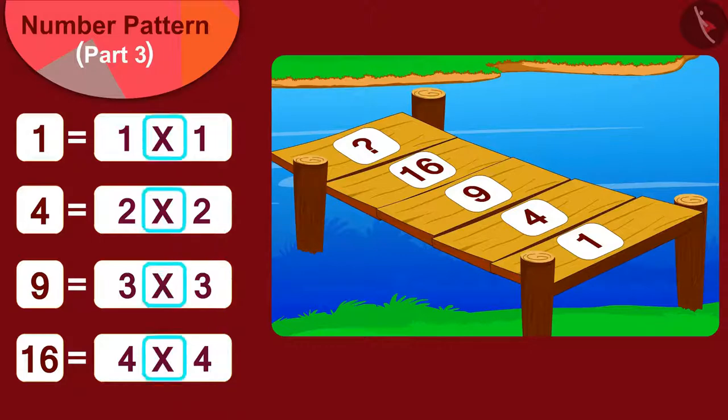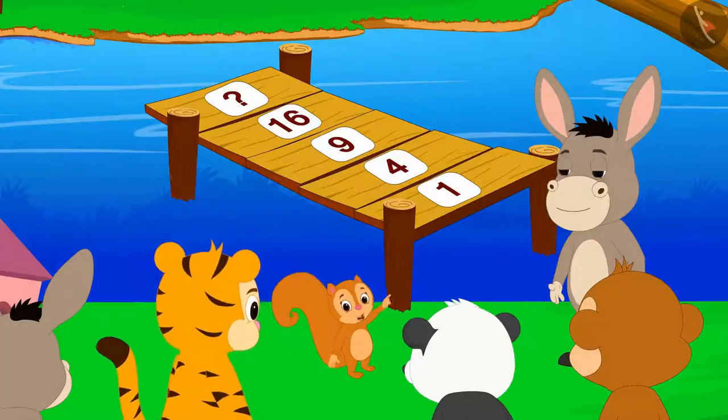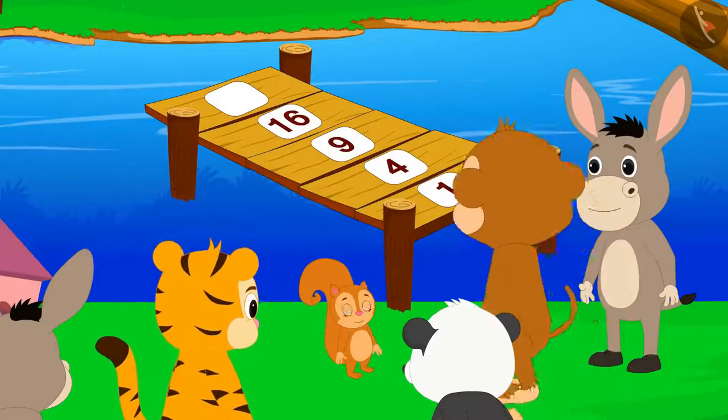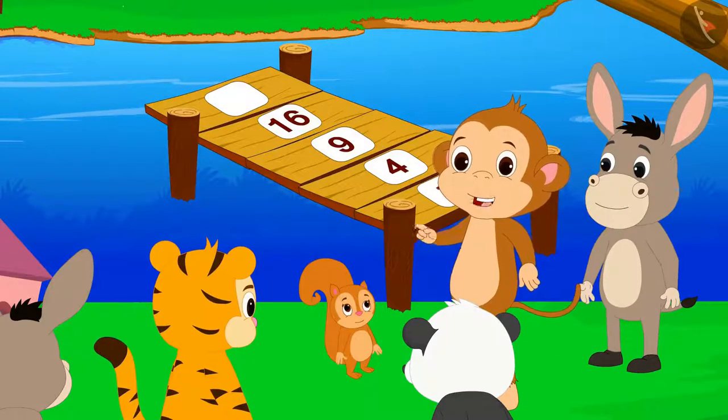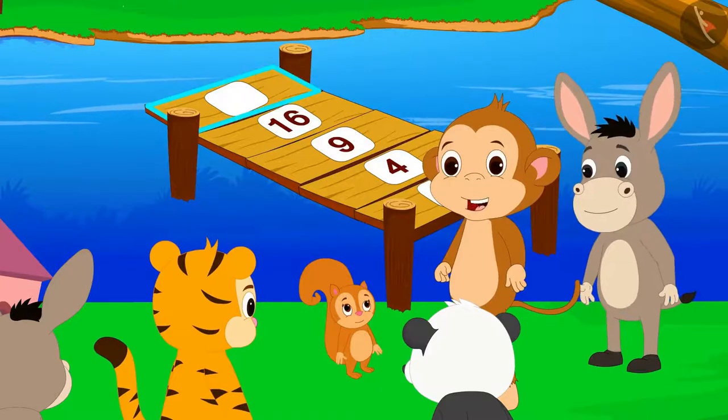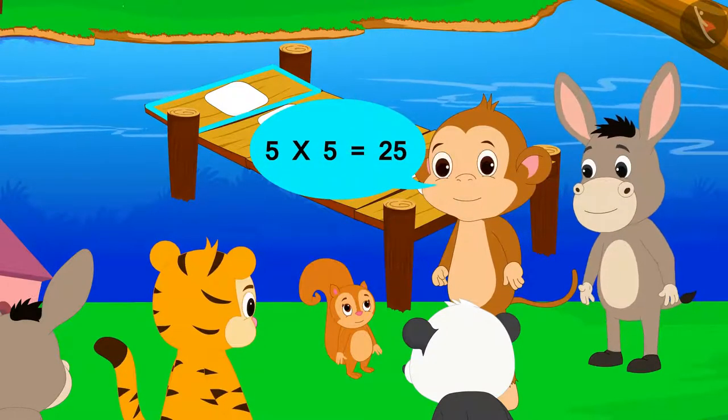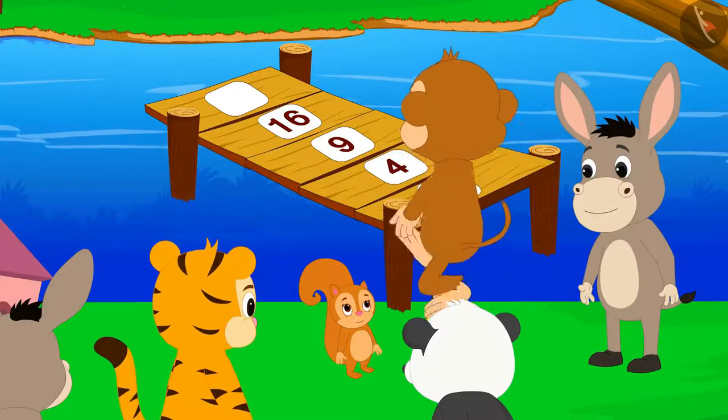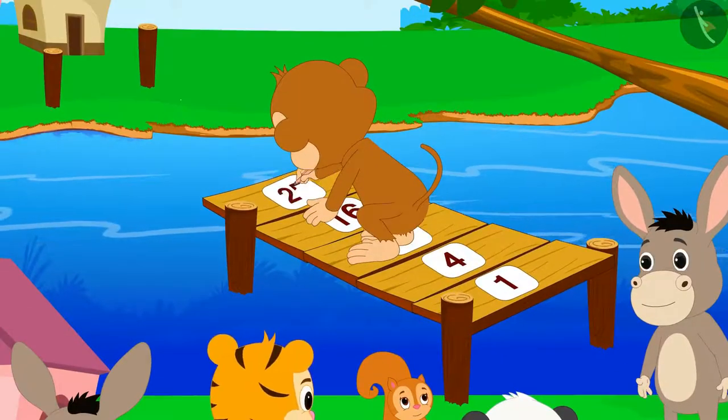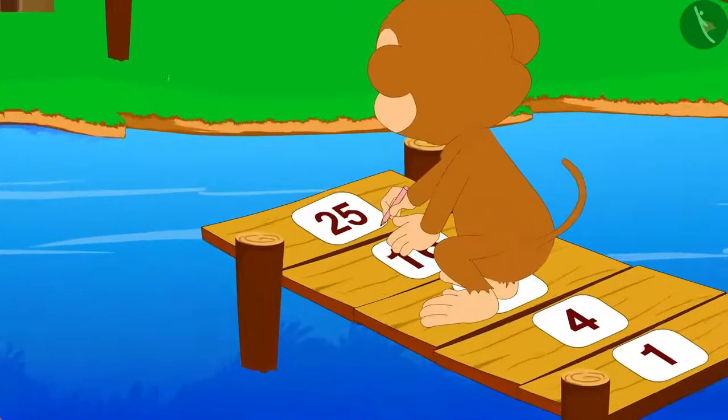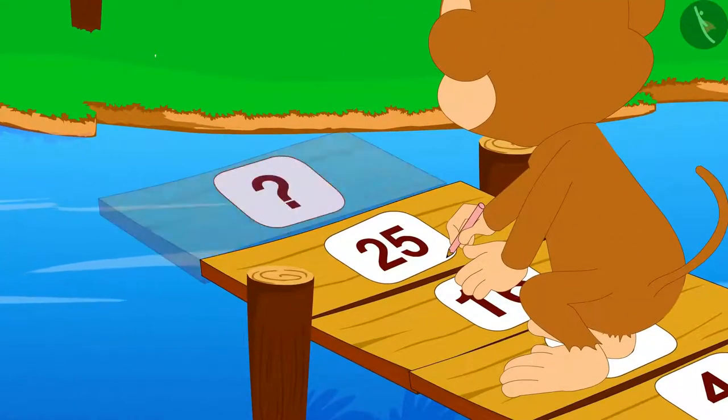"That would mean the number written on this fifth plank would be five times five: twenty-five." Saying this, Babban immediately wrote 25 on the fifth plank. As soon as Babban wrote the number, the next plank of the bridge got added to the bridge.